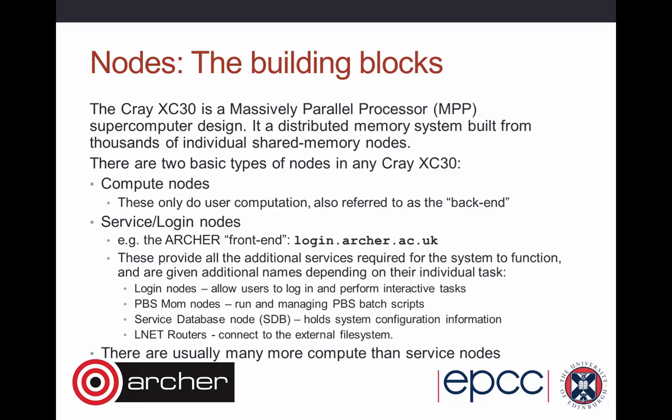Archer is built from a bunch of nodes — it's a massively parallel processor (MPP) system built from a large number of nodes, and each of these nodes is a small shared memory computer. The back-end nodes have 24 Intel processor cores in a single shared memory node. There are two basic types of nodes on any Cray XC30, and Archer is no exception. The compute nodes are often called the back ends — a large array of nodes that do large parallel jobs. We also have service or login nodes; the ones you'll come across most notably are the front-end nodes, which you log into via SSH to archer.ac.uk.